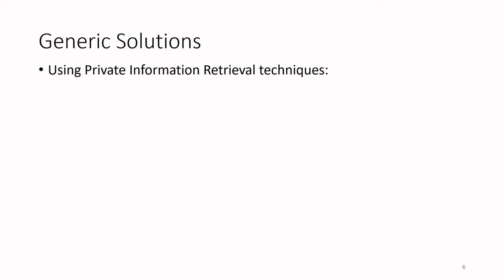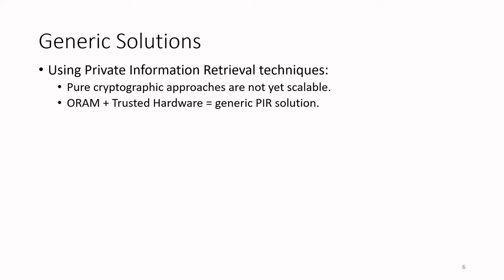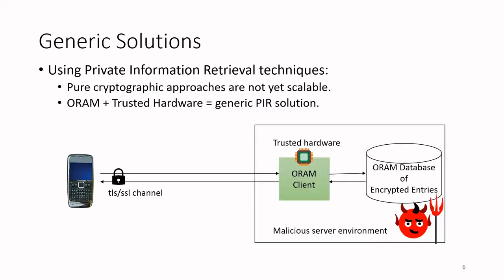One solution is to use private information retrieval techniques. However, pure cryptographic approaches are not scalable for this kind of problem in terms of computational and bandwidth overhead. Another approach is to use oblivious RAM and trusted hardware to offer a generic PIR solution. In particular, the thin client can assume the trusted hardware resides on the server, and this trusted hardware will perform accesses on the encrypted database on behalf of the thin client, with those accesses protected using ORAM.